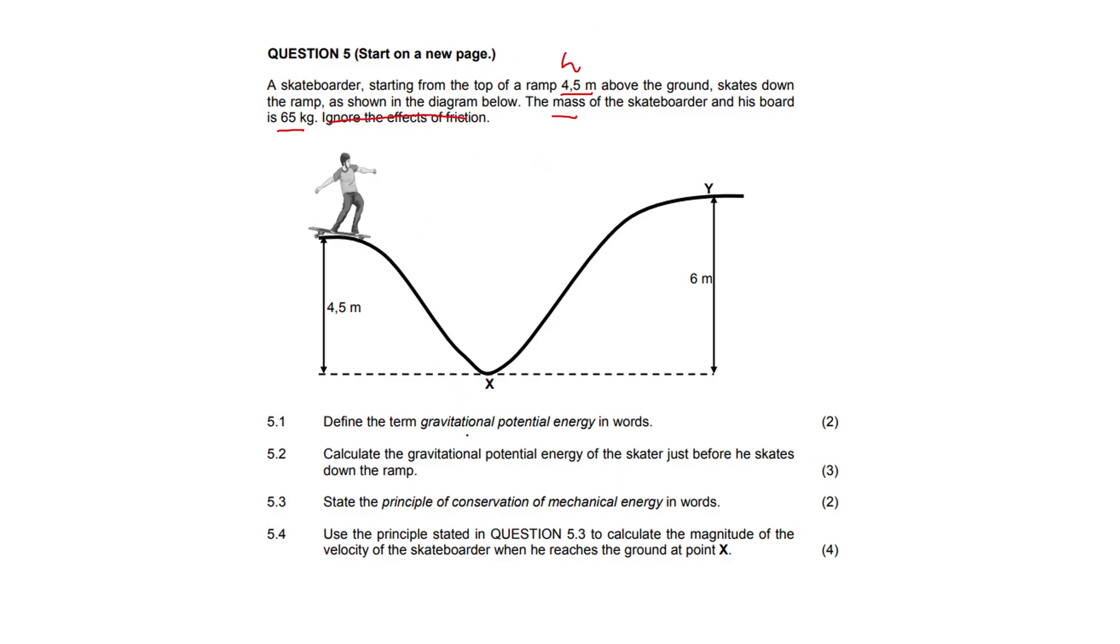Define the term gravitational potential energy in words. Please study the definitions. Gravitational potential energy is the energy an object has because of its position in the gravitational field relative to some reference point.